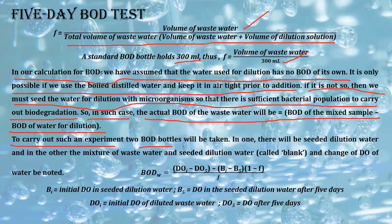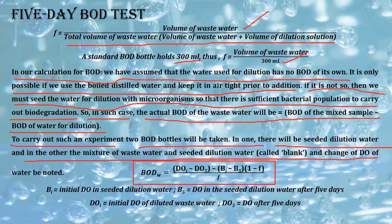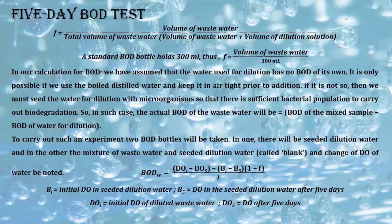If boiled distilled water is not used, the actual BOD of wastewater = BOD of mixed sample − BOD of water for dilution. Two bottles should be taken: one seeded, one unseeded (blank). The formula becomes: BOD_w = (DOᵢ − DO₅)/f − (Bᵢ − B₅)(1 − f)/f, where Bᵢ is initial DO of the seeded solution and B₅ is DO of the seeded solution after five days.